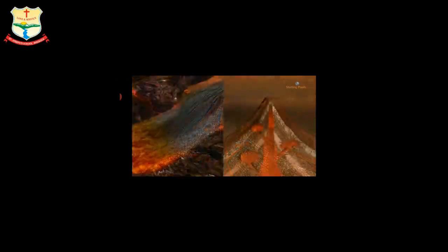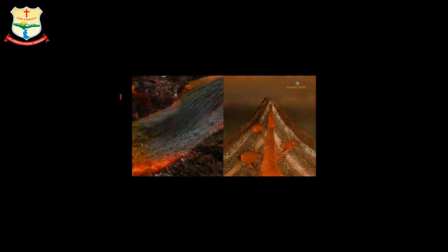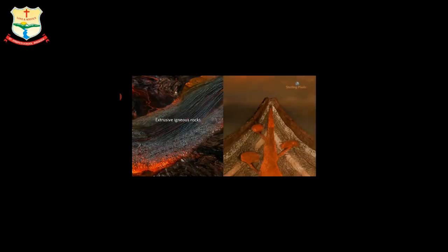So, igneous rocks are of two types: extrusive igneous rocks and intrusive igneous rocks. Igneous rocks are also known as primary rocks because they are the first rocks to be formed on the Earth's surface.